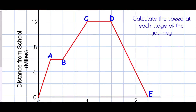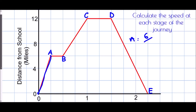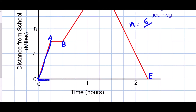Can we actually calculate the speed at each stage of the journey? At section A, speed is distance divided by time. They travelled a distance of six miles in a quarter of an hour, or 0.25 hours. So six divided by a quarter — and how do we divide by a quarter? We multiply by four. So six times four gives us 24 miles per hour. At part B, the bus is not moving, so the speed at B would be zero miles per hour.